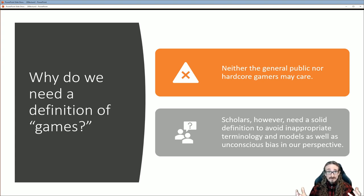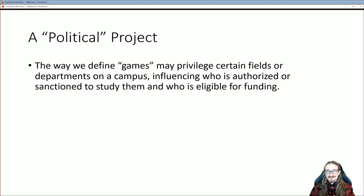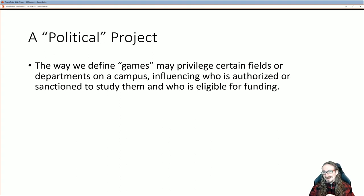If we don't have a good framework and don't really know what we mean by 'game,' we can run into unconscious biases and end up privileging a certain type of game over another. Think about fields like zoology or botany — they need to classify plants or animals clearly. Without good terminology and categories, everything starts to fall apart.